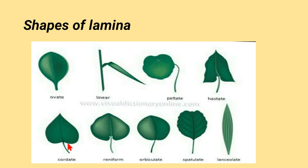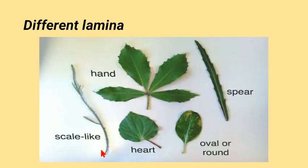The cordate leaf is heart-shaped. Obcordate is like an inverted heart. A reniform leaf is kidney-shaped. Orbiculate is a rounded leaf. Spatulate looks like a spatula. Lanceolate is shaped like a lance. There are also scale-like leaves, found on plants like pine cones.